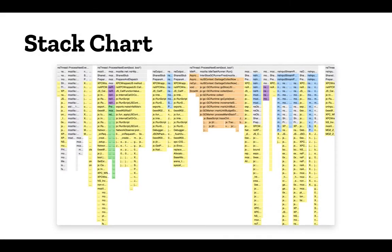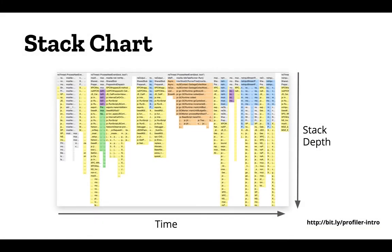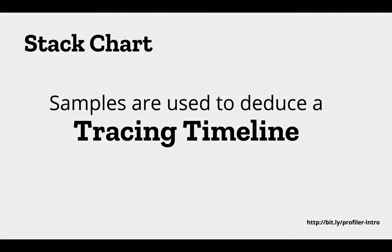The stack chart is another view similar to the flame graph, but instead of showing total summarized time it's a timeline — not a summary. Time goes from left to right on the horizontal axis and stack depth grows downward, which is a visual indicator that this graph means something different than the flame graph. This matches other tools where, for instance, Linux perf flame graphs grow up, while stack charts in many profiling tools grow down — it's a visual indicator of the difference.